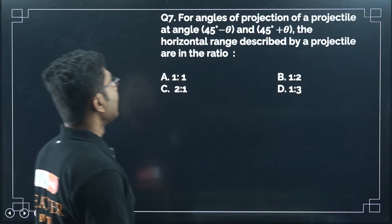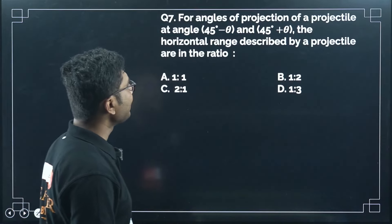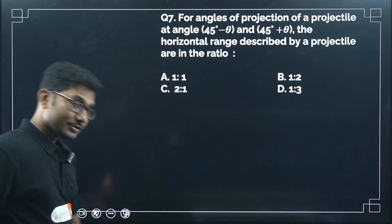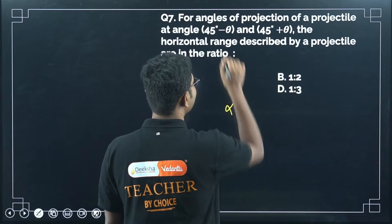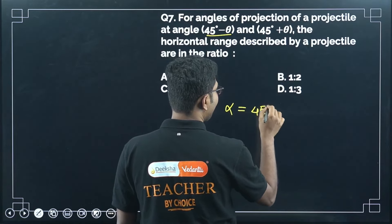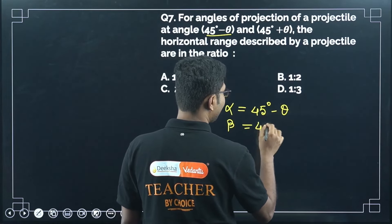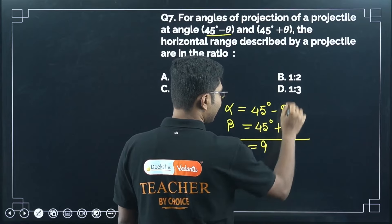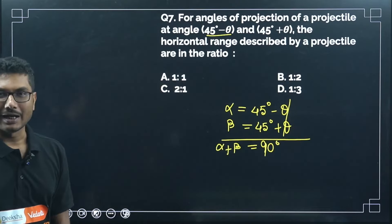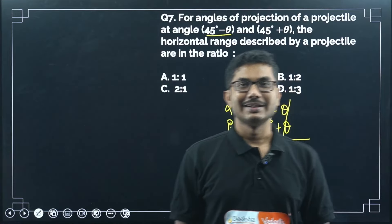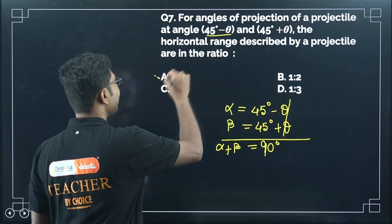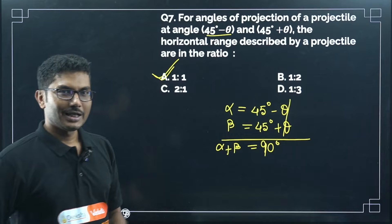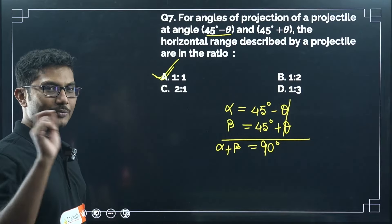Question 7: two projectiles are projected at angles 45°-θ and 45°+θ. The ratio of their horizontal ranges is asked. Adding the two angles: (45°-θ) + (45°+θ) = 90°. So they are complementary angles. For complementary angles of projection with the same initial speed, the range is equal. Therefore R1 : R2 = 1 : 1. This is a one-line question if you know the theory.